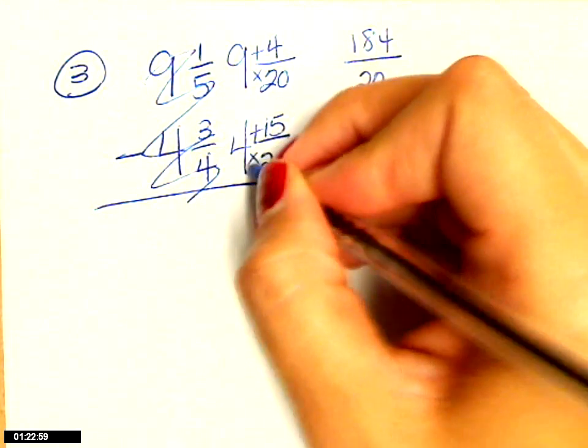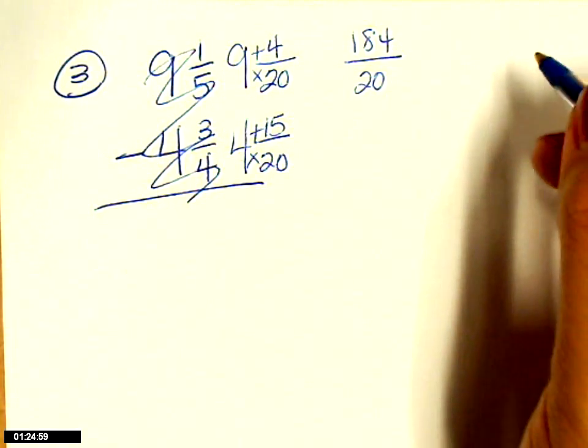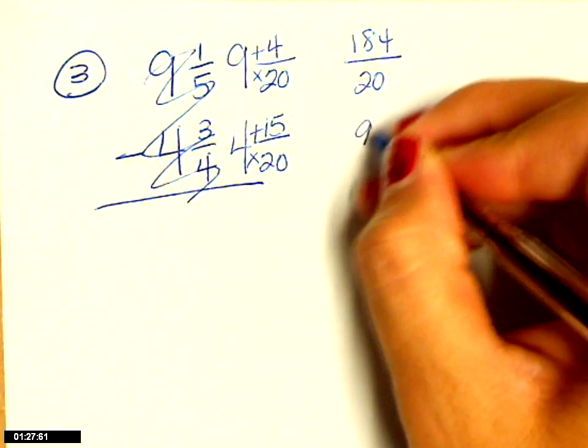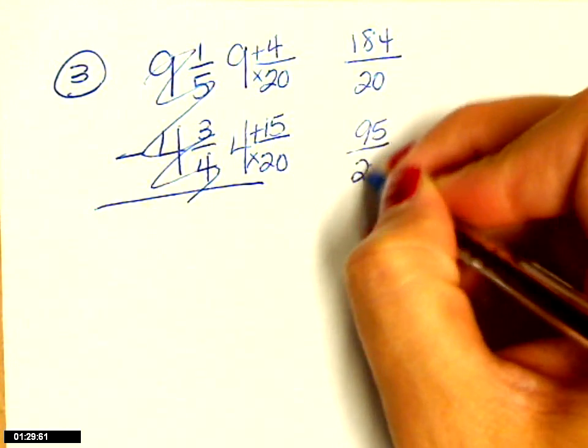Do the Texas thing. 20 times four? 80. 80 plus 15? 95. 95. Keep your denominator.